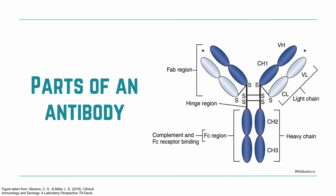Looking at the antibody as a whole, it is composed of three distinct regions. First, you have the FAB region — FAB stands for fragment antigen binding. This fragment is responsible for attaching to the specific epitope that the antibody is specific for. Next, we have the hinge region, which is composed of a variety of sulfide bonds and is very flexible, allowing the antibody to change its shape to better attach to the antigen. Lastly, we have the FC region — FC stands for fragment crystallizable. This region is the effector region of your protein, responsible for complement and FC receptor binding in the case of opsonization.